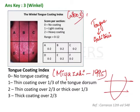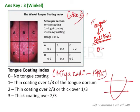The answer to this question is that the tongue coating index was given by Winkle. He formed this index primarily for halitosis. What he did was divide the tongue into six sections, and on each section there was a scoring of 0 to 2.